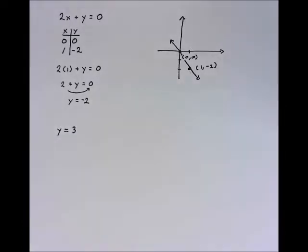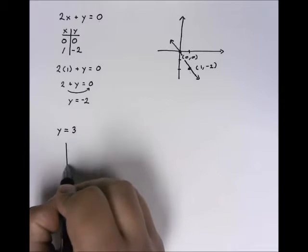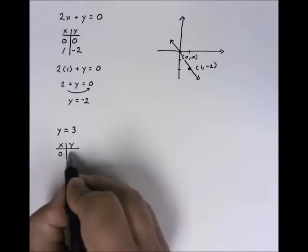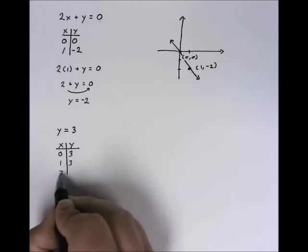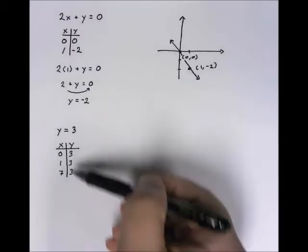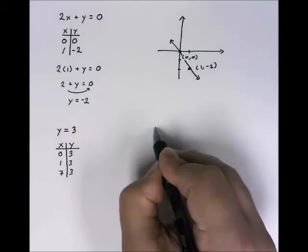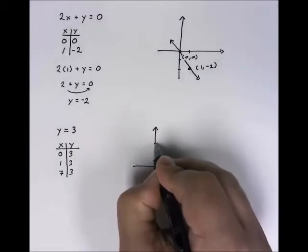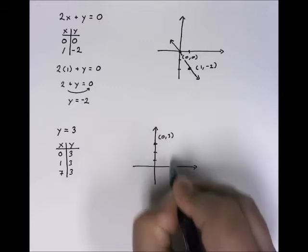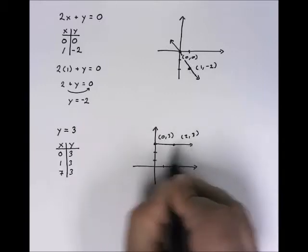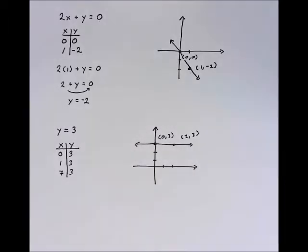The other time the table isn't going to work is when you only have one of your variables. In this case, y equals 3. Because in this case, no matter what I put in for the x, y is 3. So no matter what the x value is, the y value is always constant at 3. When you get one of these, what you want to do is just pick two points where y is 3. Let's say 0, 3, and 2, 3. And again, we have our line.